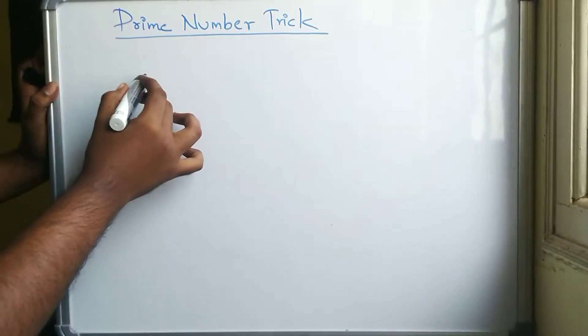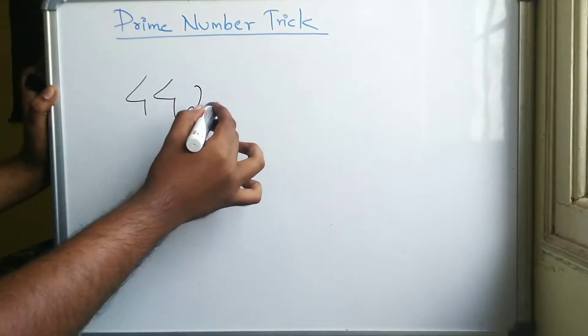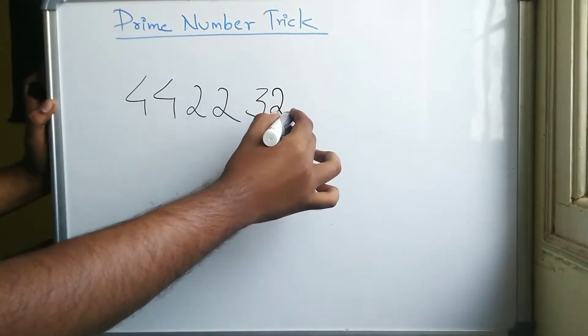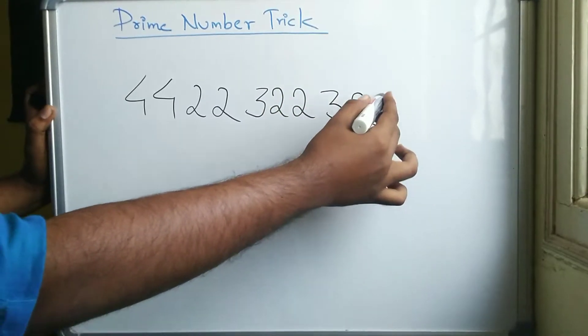Let's write a number: 4, 4, 2, 2, 3, 2, 2, 3, 2, 1.